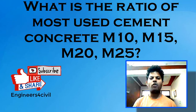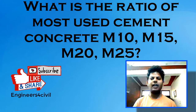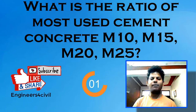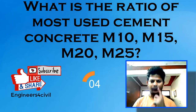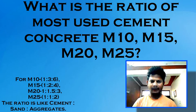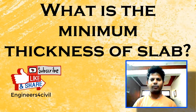What is the ratio of most used cement concrete M10, M15, M20 and M25? The ratios are: M10 = 1:3:6, M15 = 1:2:4, M20 = 1:1.5:3, and M25 = 1:1:2.